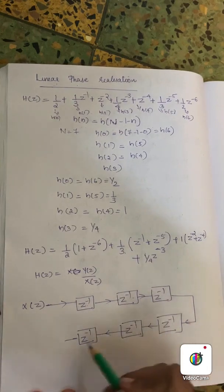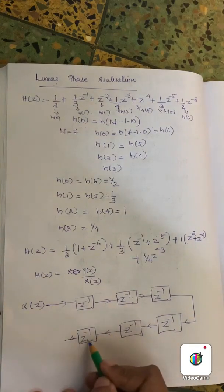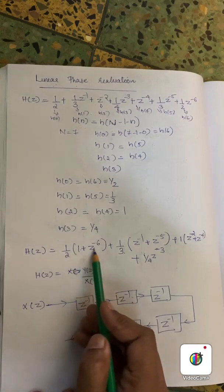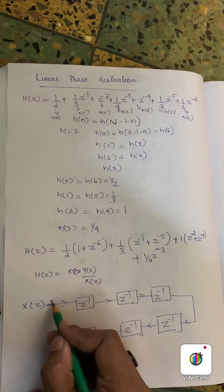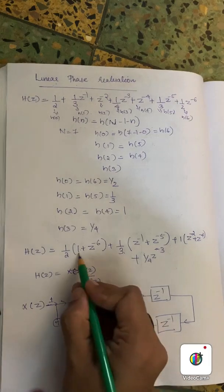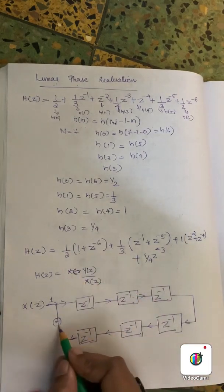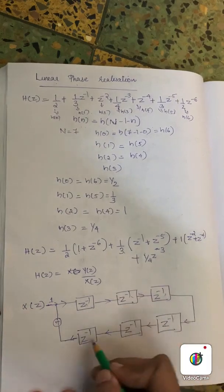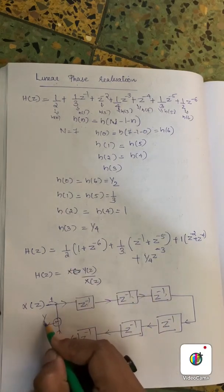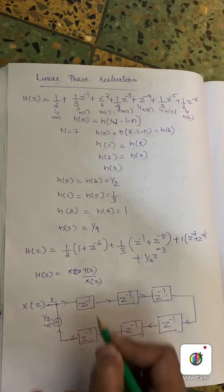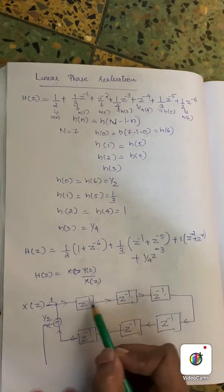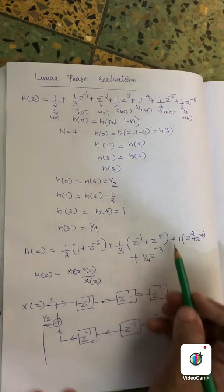We count 1, 2, 3, 4, 5 delay stages. Then we add z raised to minus 6. We add corresponding taps — z raised to minus 1 pairs combined — and at each node we get a plus connection. Counting outputs: 1, 2, 3, 4, giving z raised to minus 6.